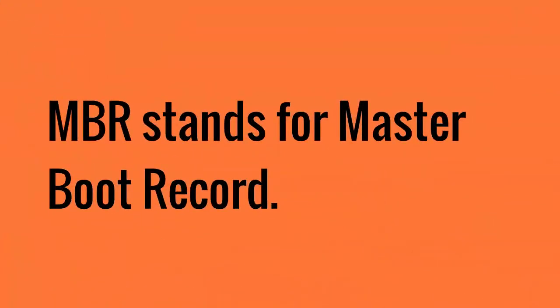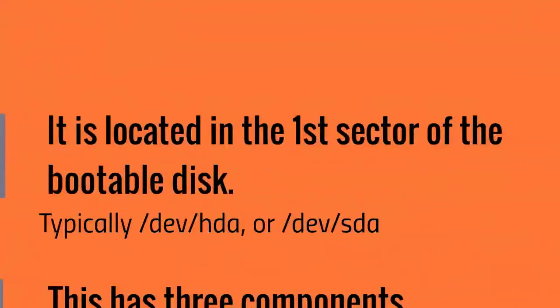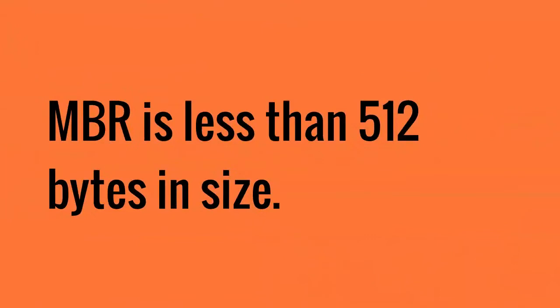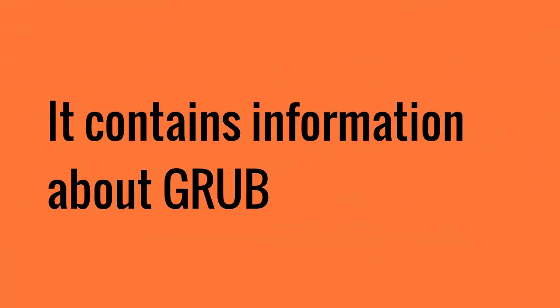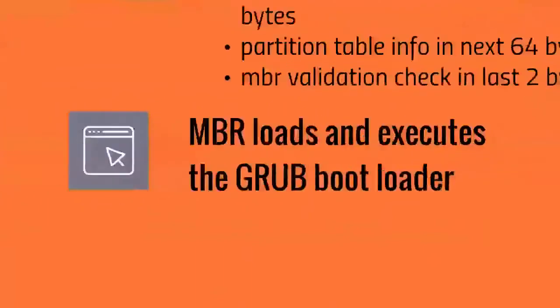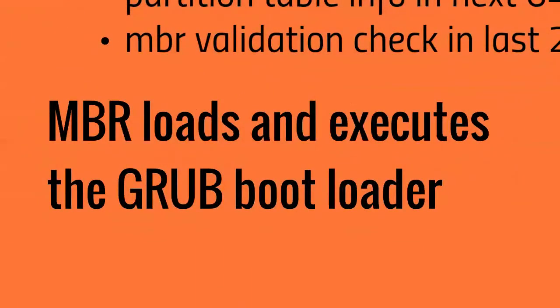Step 2: MBR. MBR stands for Master Boot Record. It is located in the first sector of the bootable disk. MBR is less than 512 bytes in size. It has three components: primary bootloader info in the first 446 bytes, partition table info in the next 64 bytes, and MBR validation checks in the last two bytes.